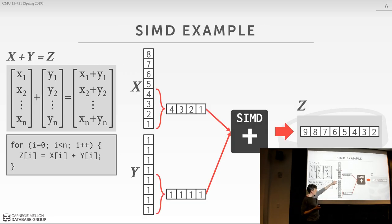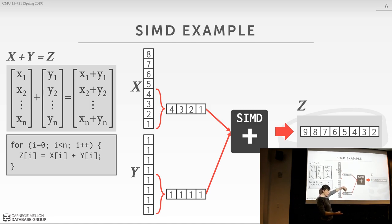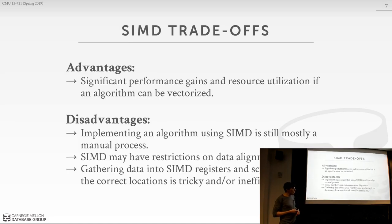Not all operators can be vectorized effectively — you may not get the benefit you'd expect because you have to stage things in registers and write them out. We also have to worry about data alignment issues. In my example, I had 32-bit integers in a 128-bit register, so I could fit four of them. If I had 10-bit values, that won't work because the instruction expects 32-bit values. The different sizes and lanes — where we store values — must be aligned to what the instruction expects. Getting data in and out can be tricky and expensive.